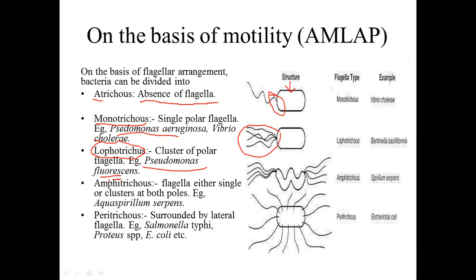Next is the Amphitricus. The word 'amphi' means both. So whenever flagella are present at both polar ends, it is called Amphitricus.